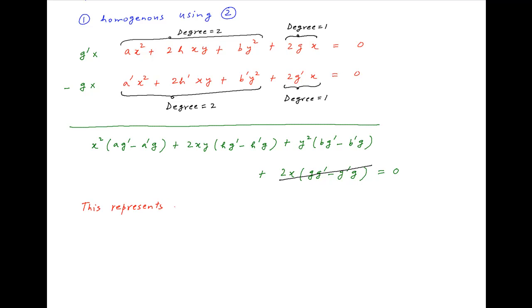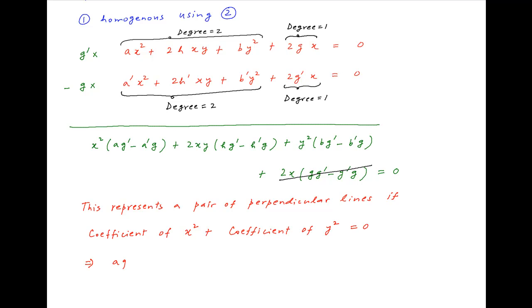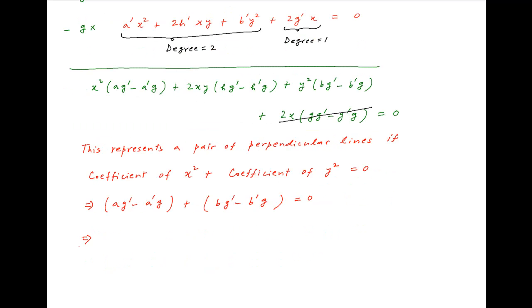This equation represents a pair of perpendicular straight lines if the coefficient of x² plus the coefficient of y² equals 0, which implies (ag' − a'g) + (bg' − b'g) = 0. This can be written as −g(a' + b') + g'(a + b) = 0. Multiplying both sides by −1, we get g(a' + b') − g'(a + b) = 0, and this is the required result.